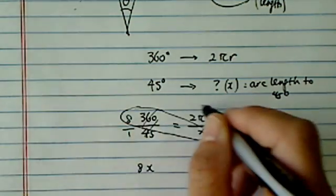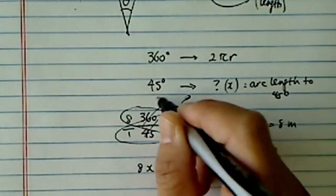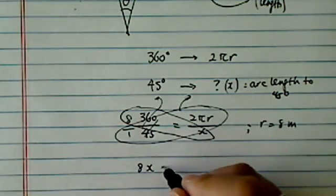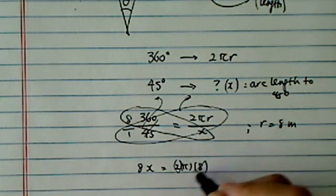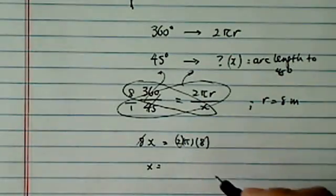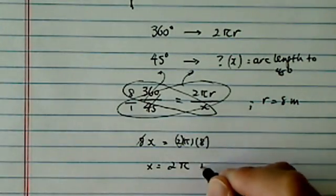I'm doing a cross-multiplying. Drawing a butterfly, basically. So 8x is equal to 2 pi times r, which is 8. And let's divide this. So x is equal to 2 pi meters.